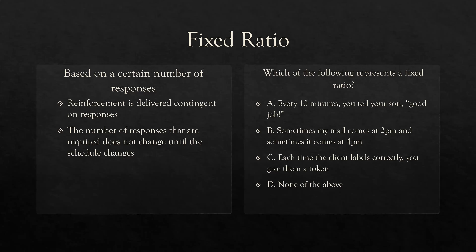So which of the following represents a ratio? A: every 10 minutes you tell your son good job. How are we breaking down our questions? Ratio means based on responses. If you see a reinforcement schedule based on time, you can eliminate ratio — you know you're looking at an interval schedule. So A cannot be a ratio schedule because it's based on time.